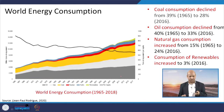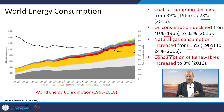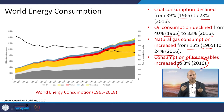Energy consumption data at the world level shows that in 1965 coal-based consumption was 39%, declining to 28% in 2016. Oil consumption declined from 40% to 33% from 1965 to 2016. Natural gas consumption increased from 15% in 1965 to 24% in 2016. Renewables account for only about 3% of the total, but are picking up due to increased awareness and the negative externalities of fossil fuel-based energy resources, leading to greater investment in renewables.